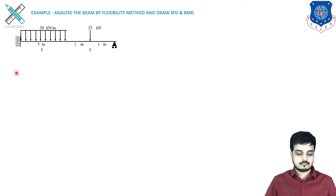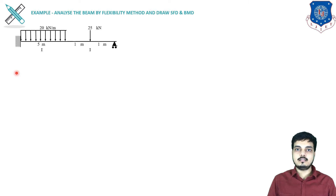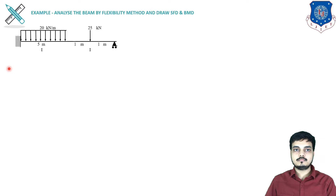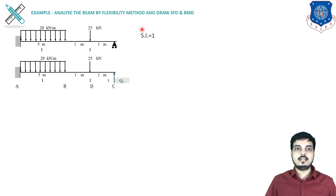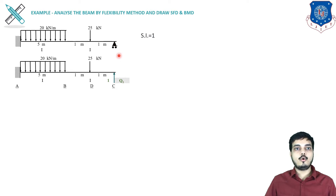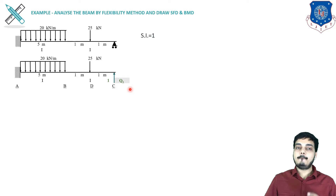First of all we will release our beam on the basis of static indeterminacy (SI). So let's find SI. The SI for the given structure is one — the beam resists three reactions at the fixed support (vertical reaction, horizontal reaction, and one moment) and one vertical reaction at the roller. So four minus three equals one. Our number of unknowns is one.